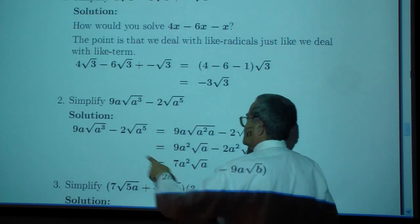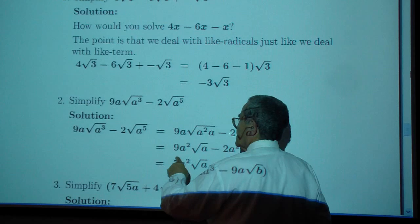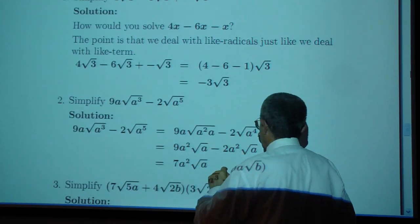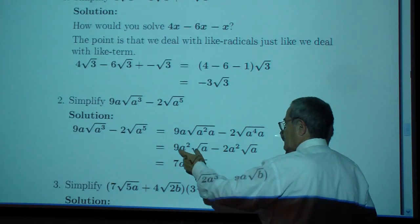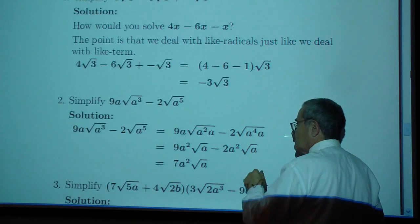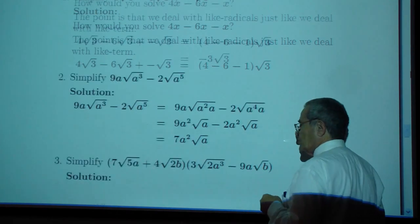Here you take out an a squared which gives you a times a square. You take out a to the four as a square and you have a squared square root of a, a square root of a which gives you nine minus two or seven of those.